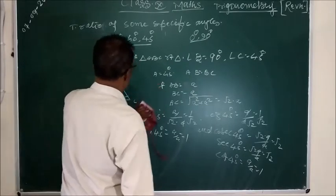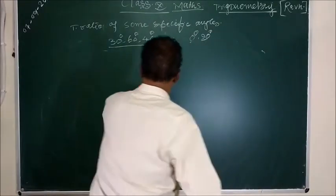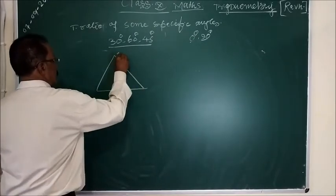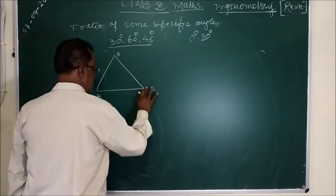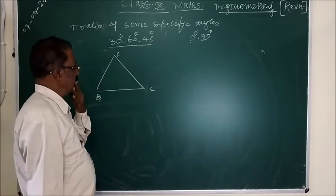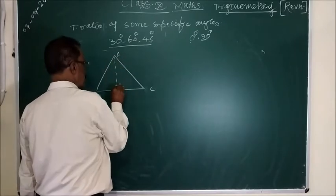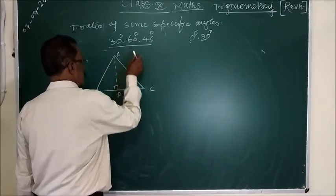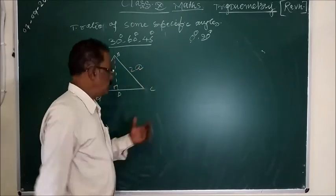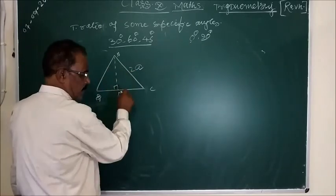Now we see for 30 and 60 degrees. For 30 and 60, we consider an equilateral triangle. The question arises: why do we consider an equilateral triangle? Because in an equilateral triangle, each angle is 60 degrees. And we draw a perpendicular. Suppose this side is 2A — it will be easier in simplification. If you suppose the side is A, this half will be A by 2.